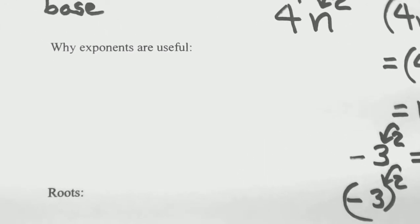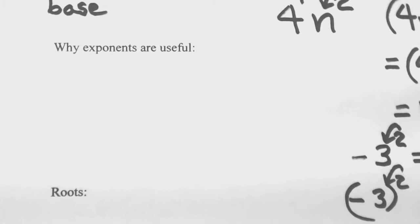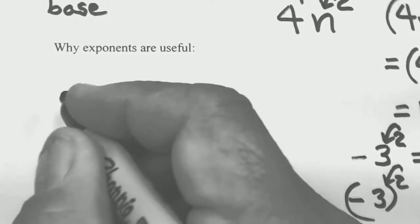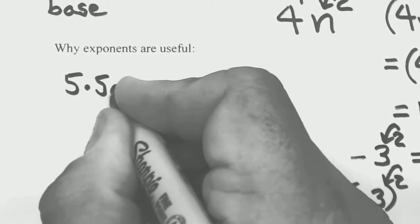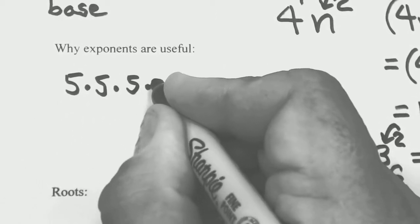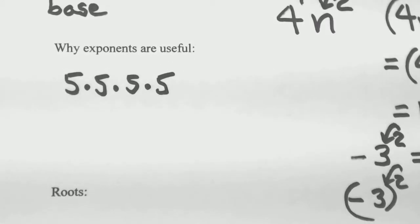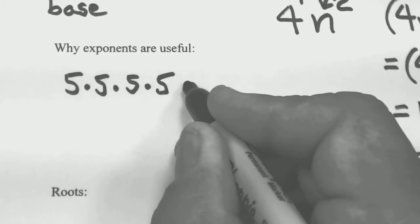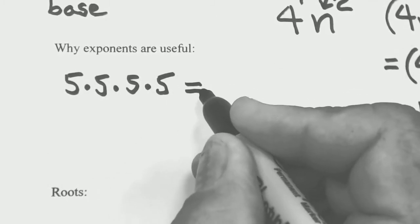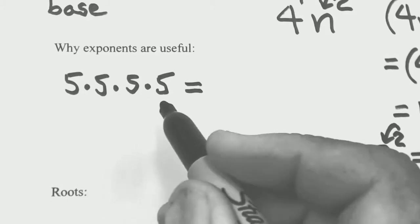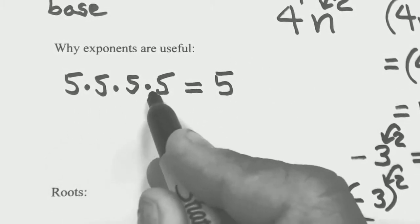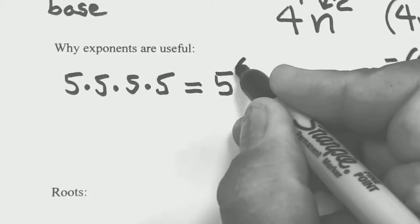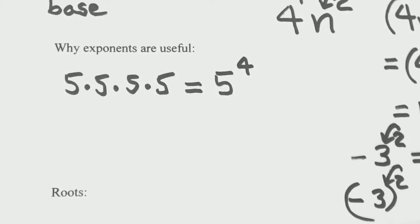Returning to some other questions about exponents: why are exponents useful? What if you have the same number multiplying itself a whole bunch of times — for instance, 5 times 5 times 5 times 5? It's much more convenient to rewrite this. These are all the same base, so we have base 5, and since there are 4 of them multiplying each other, we can write this as 5 to the 4th power.